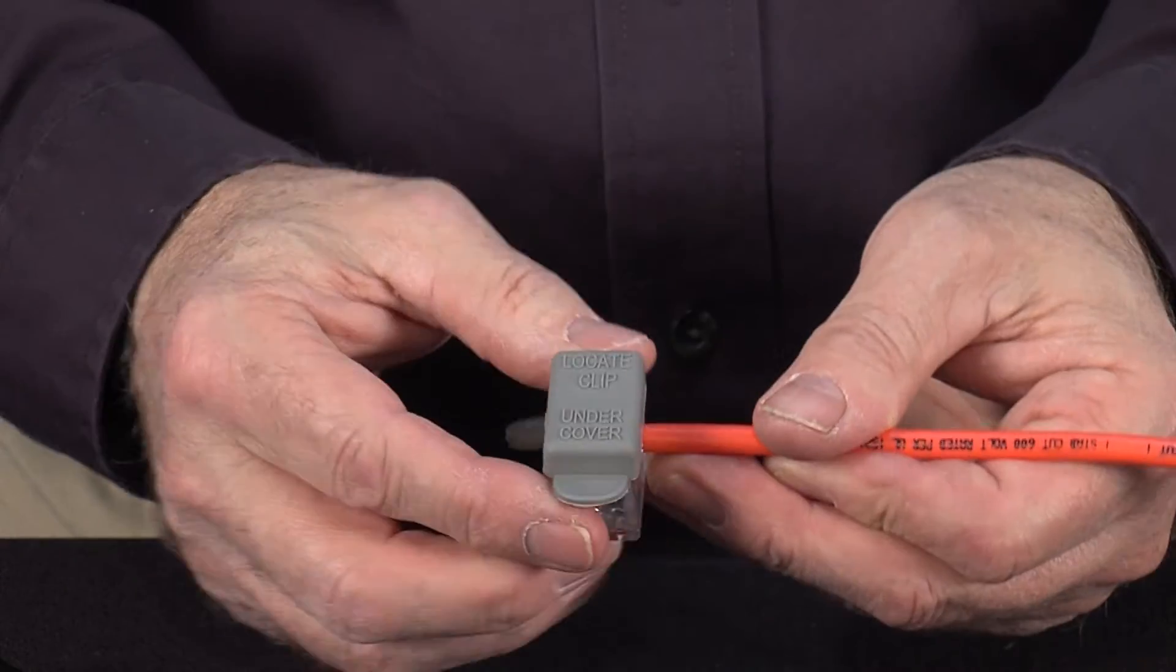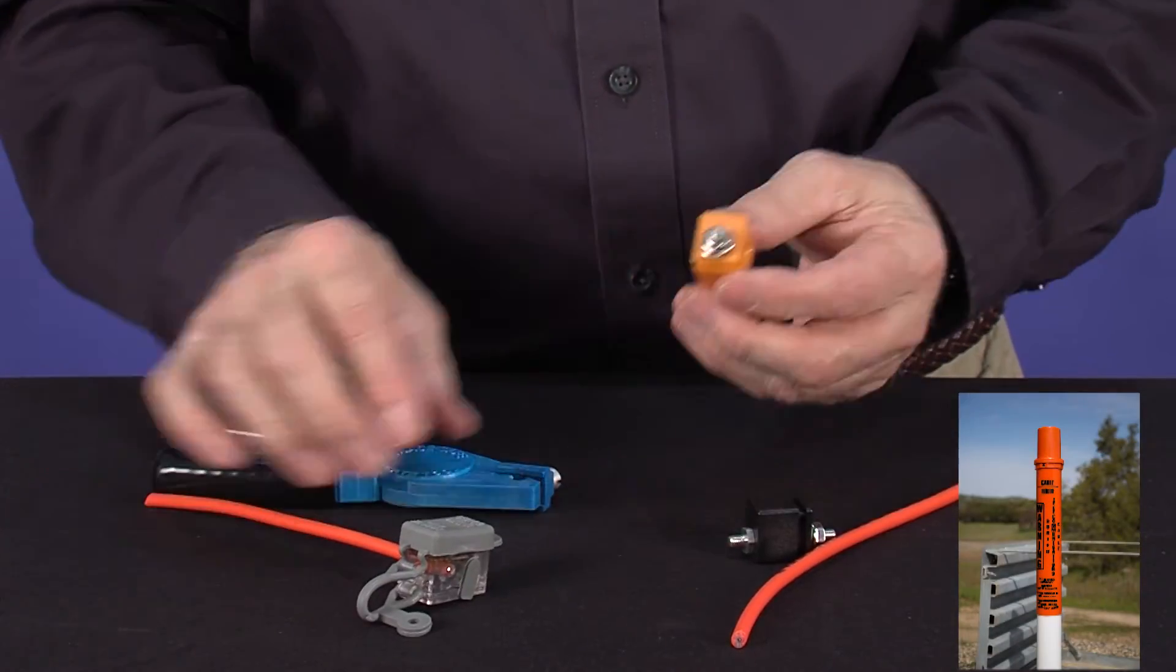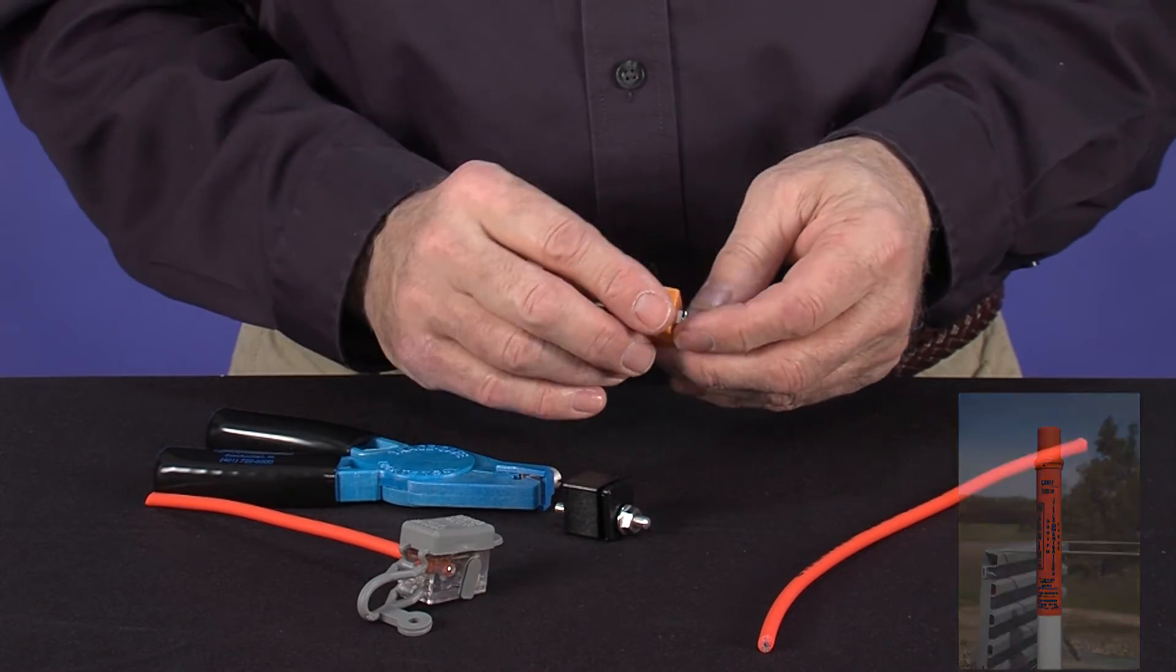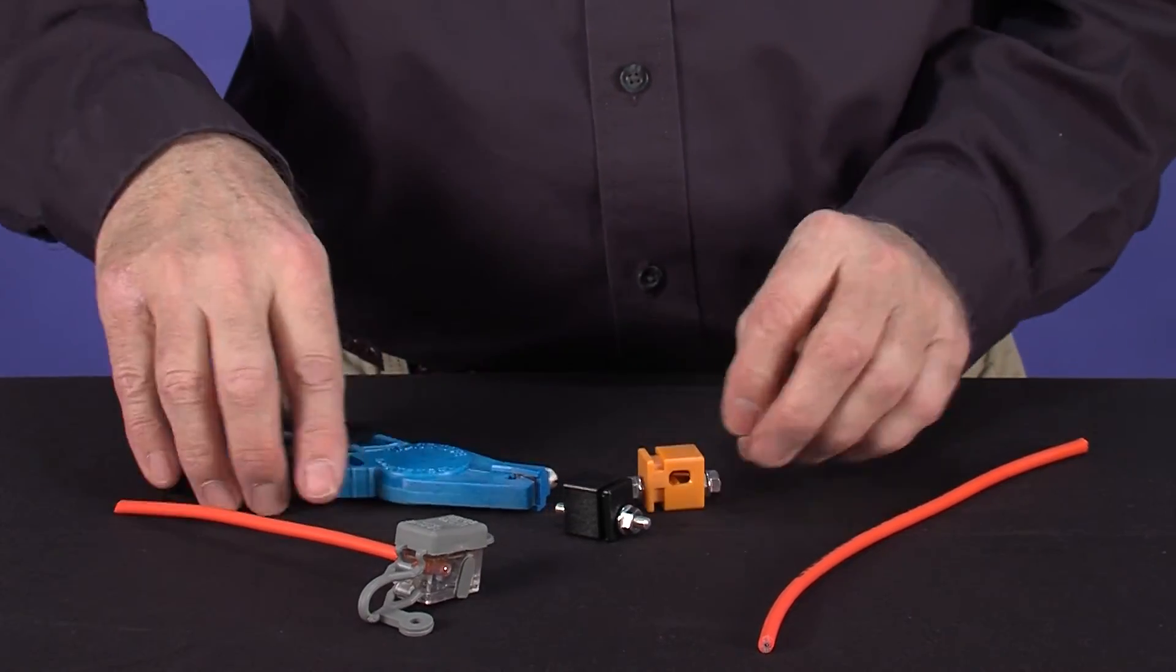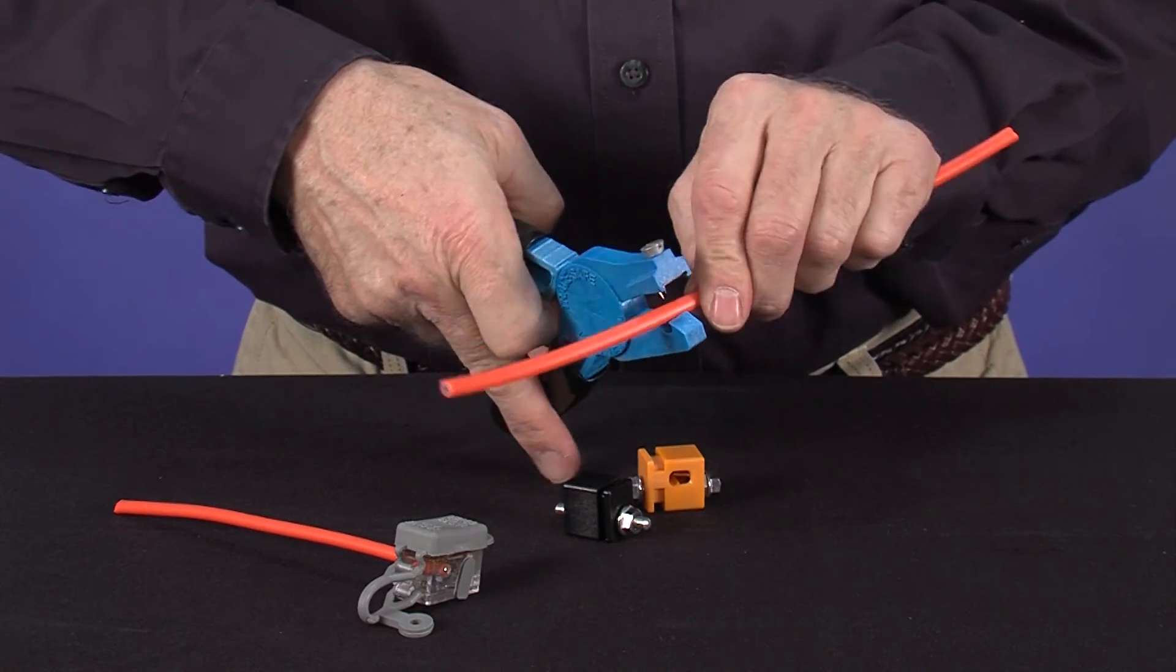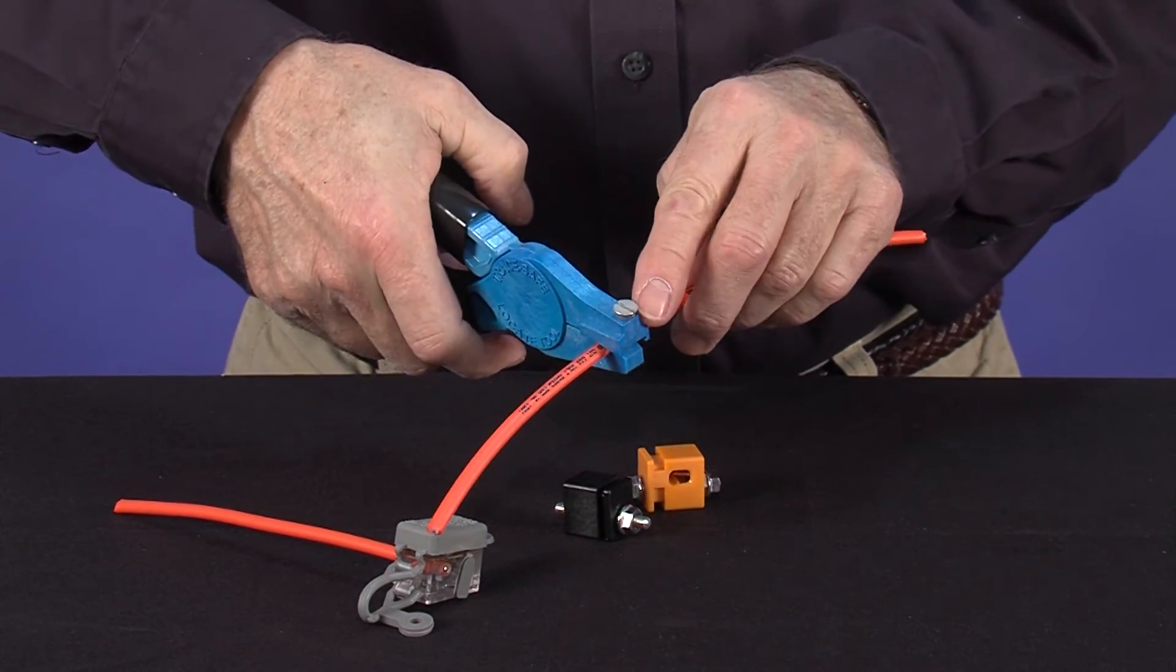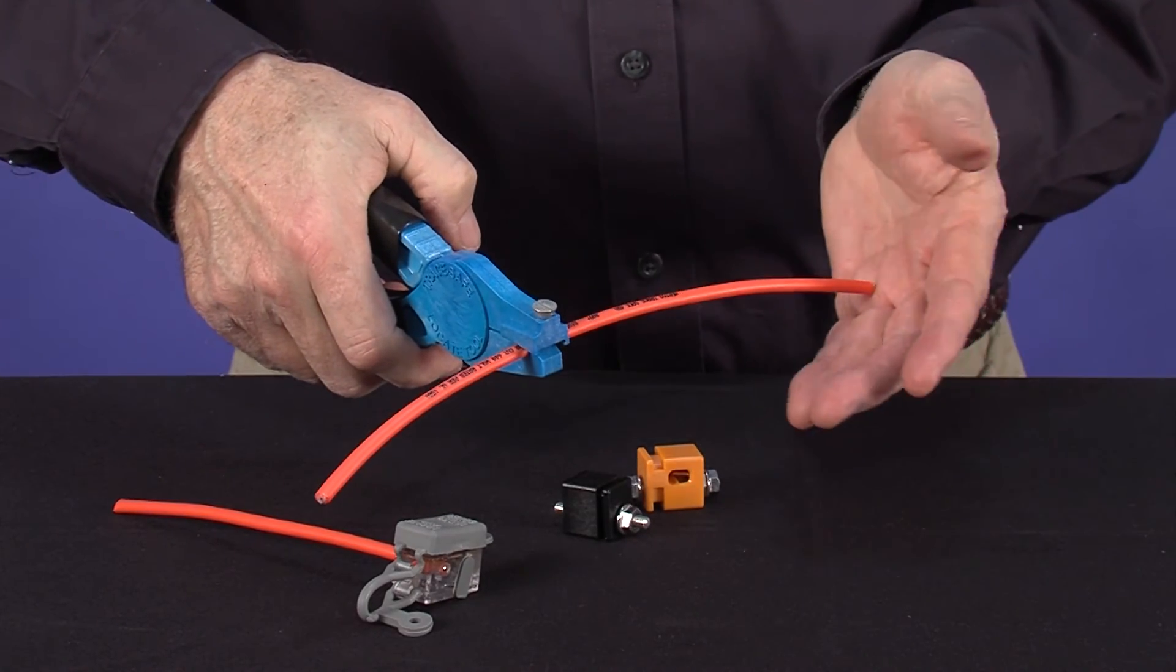Additional accessories include parts for marker posts, grounding, fire hydrants. We even have a locating tool. Locating tool is used by placing the wire on the pliers, squeeze down, energize the stud, and locate your system.